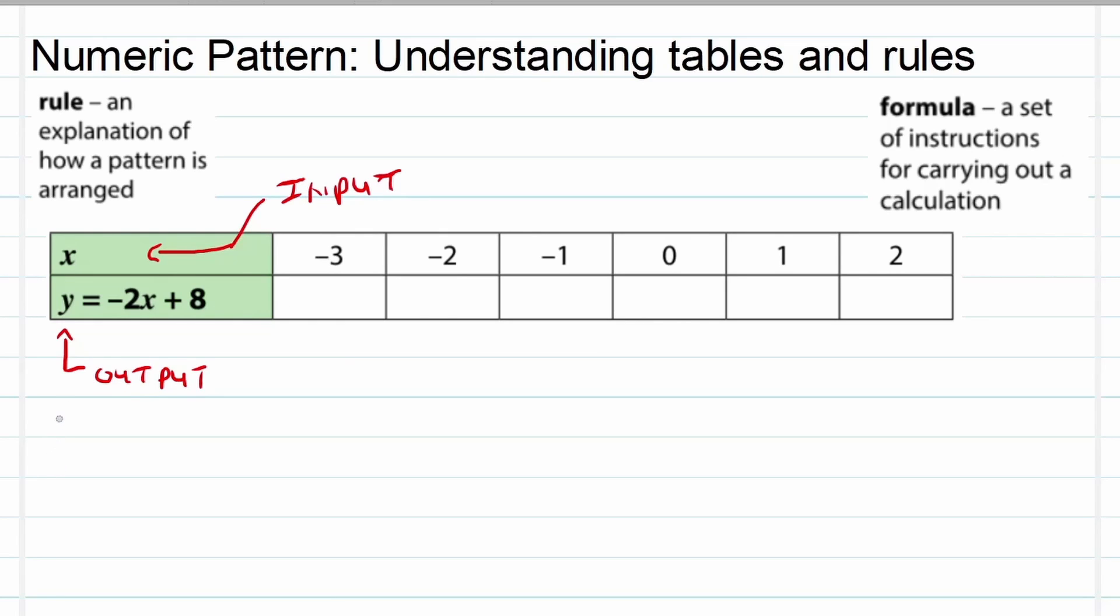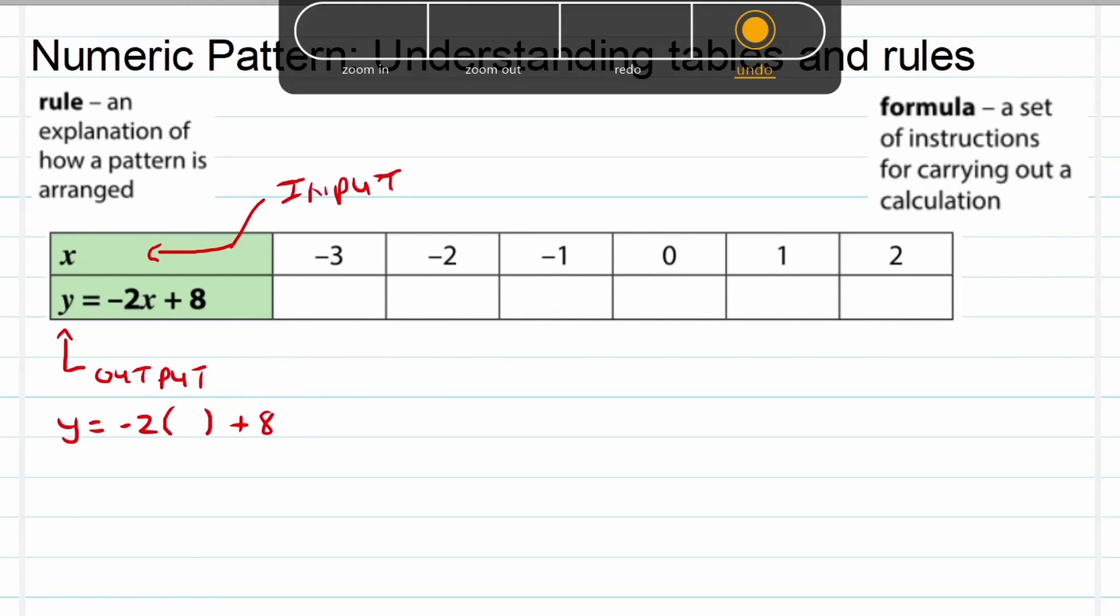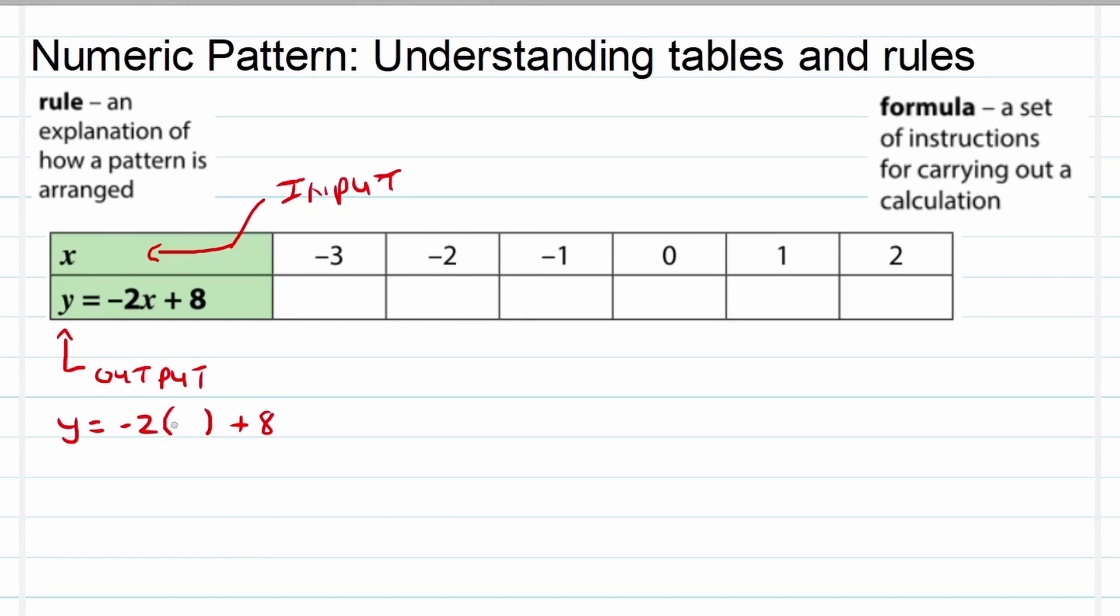In this case we'll have a formula y equals -2 times the input value, which I will put in brackets, plus 8. As we do the calculations, we'll have the input value of -3, then -2, then -1, then 0, and so on and so forth, 1 and then 2. Let's take it step by step. First, -3 as our input value: -2 times -3, and negative times a negative is a positive, 2 times 3 is equal to 6, so we've got 6 plus 8, and the answer is equal to 14. That's our first output value for the input value of -3.